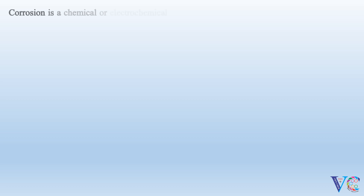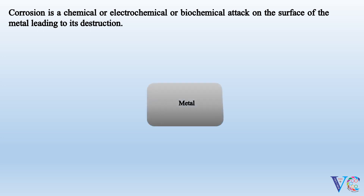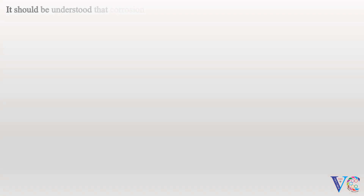Corrosion is a chemical, electrochemical, or biochemical attack on the surface of the metal leading to its destruction. It should be understood that corrosion is a reverse process of metallurgy.